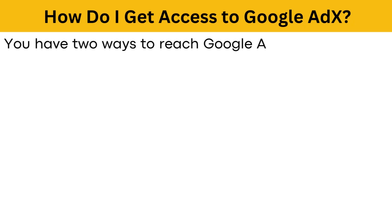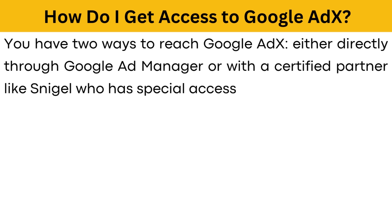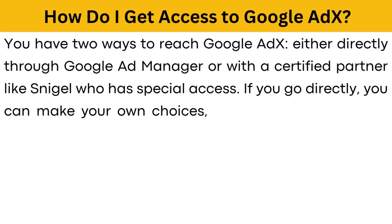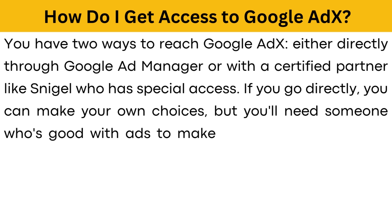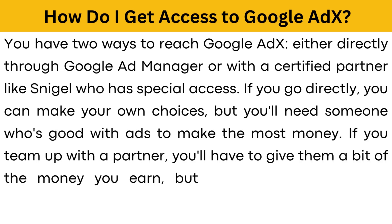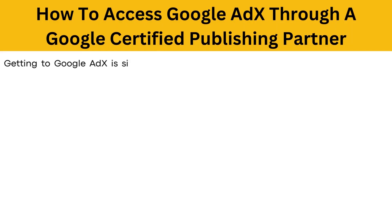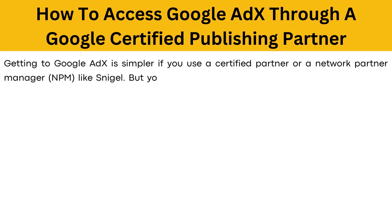How do I get access to Google AdX? You have two ways to reach Google AdX: either directly through Google Ad Manager or with a certified partner like Snigel who has special access. If you go directly, you can make your own choices, but you'll need someone who's good with ads to make the most money. If you team up with a partner, you'll have to give them a bit of money that you earn, but they'll take care of the advertising work for you. Getting to Google AdX is simpler if you use a certified partner or a network partner manager, but you'll need to meet the NPM's requirements to get in.